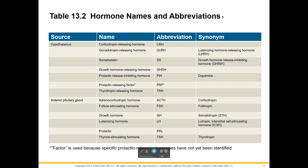Of those two, GnRH is the one we would talk about more commonly in this course. Gonads are ovaries and testes. Anytime you see 'tropin' or 'tropic,' that tells you automatically that that hormone is going to target another endocrine gland to release yet another hormone. So gonadotropin releasing hormone is talking to the gonads to release hormones — they'll be tropic hormones. Another name for that is luteinizing hormone releasing hormone, which is saying that GnRH is going to cause LH to be released.